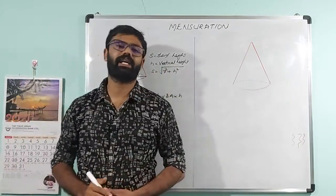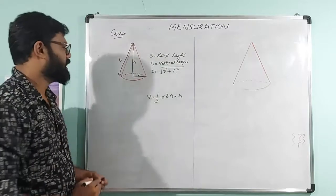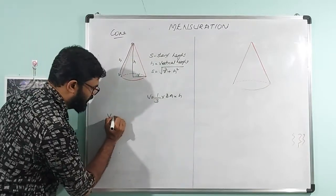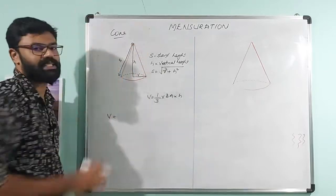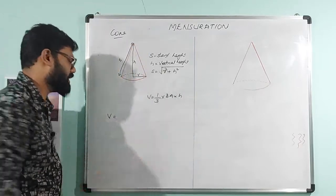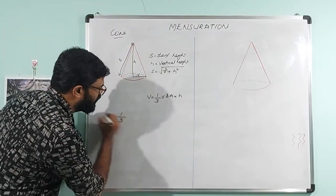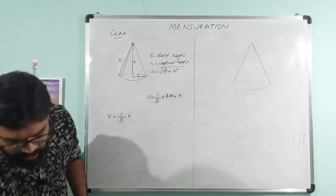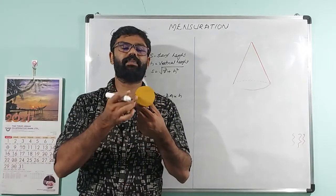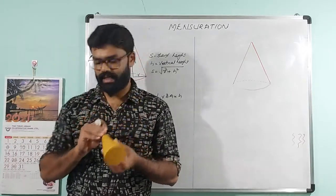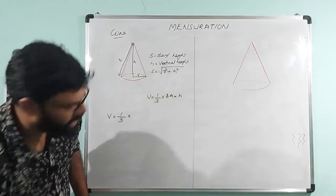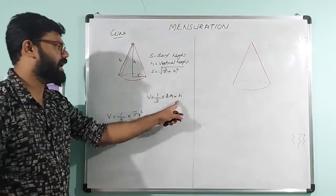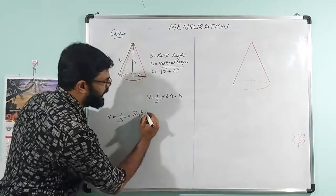The slant height uses the same equation. The cone volume equation is 1 by 3 into base area into height. The base is circular, so the area is π r². The height used here is the vertical height.